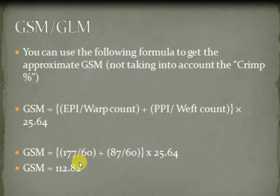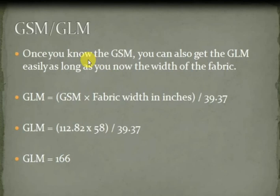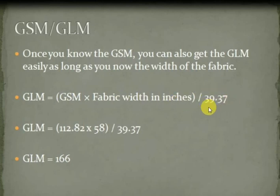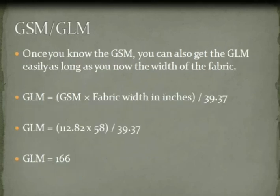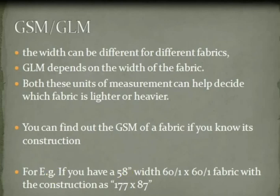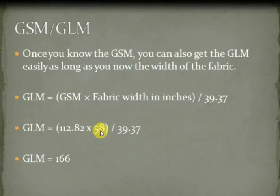Once you know the GSM, you can also get the GLM easily as long as you know the width of the fabric. The formula is: GLM = GSM × fabric width in inches ÷ 39.37, where 39.37 is the number of inches per meter. We apply the GSM of 112.82 and the fabric width of 58 inches, then divide by 39.37.